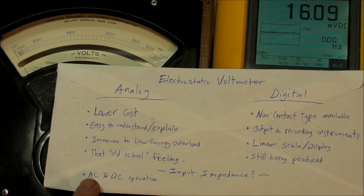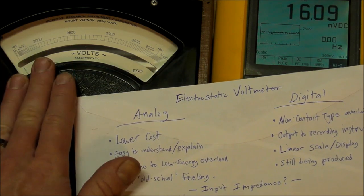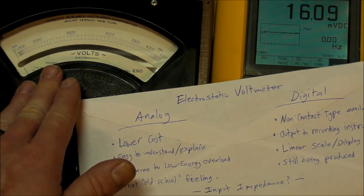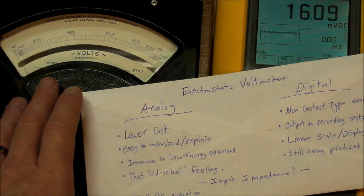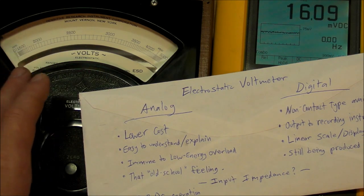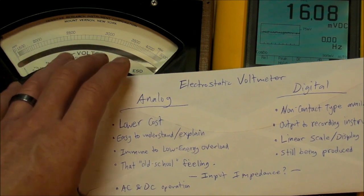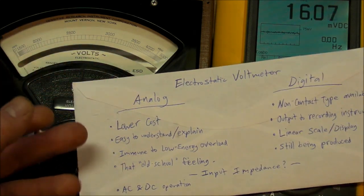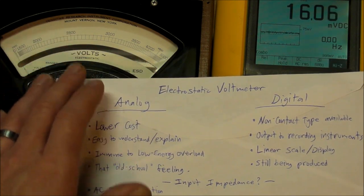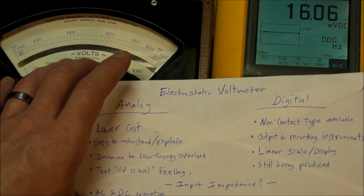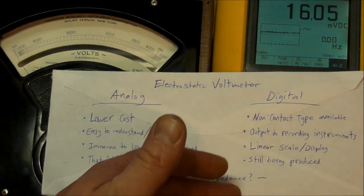Now another advantage of the analog meter is that it's immune to low energy overload and I stress low energy, because obviously if you discharge a 2000 joule capacitor bank into this thing it's going to blow up, molten aluminum all over on the inside of that thing. So certainly low energy, maybe something from an induction coil it might be able to survive that.